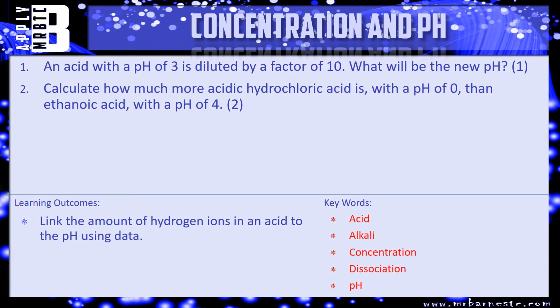And question two says, calculate how much more acidic hydrochloric acid is, with a pH of 0, than ethanoic acid with a pH of 4? That's worth two marks. Pause the video, have a go now.